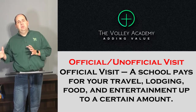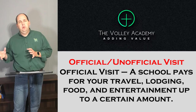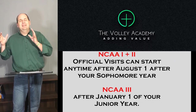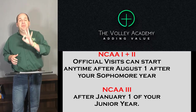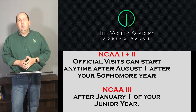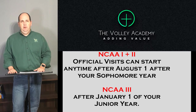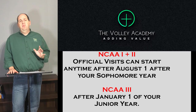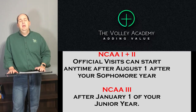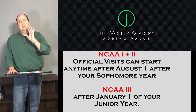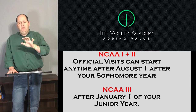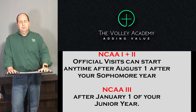Division 1 and Division 2 start their official visits on August 1st before your junior year — no matter what else you hear, it's August 1st before your junior year. Division 3 starts on January 1st of your junior year, so they are five months apart. I'd recommend getting all your Division 1 and Division 2 visits done in your junior year fall, and if you haven't found your school, then start looking at Division 3 schools.